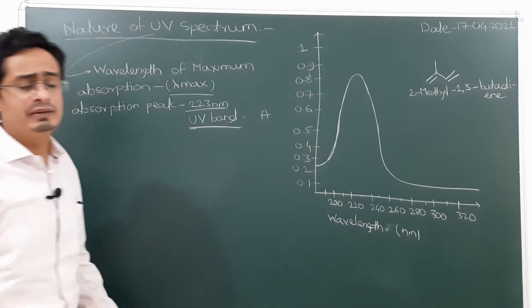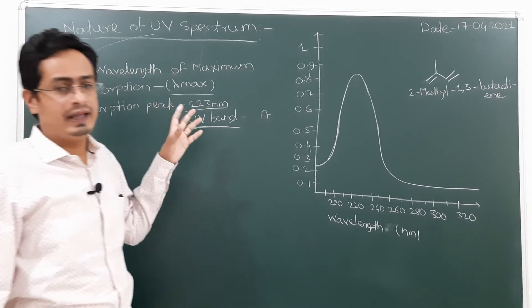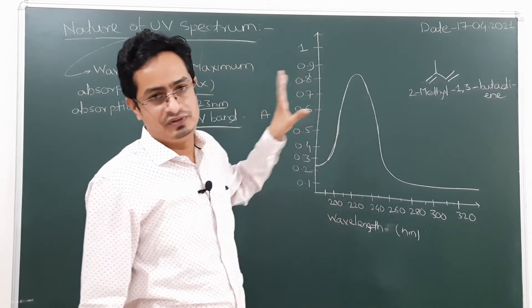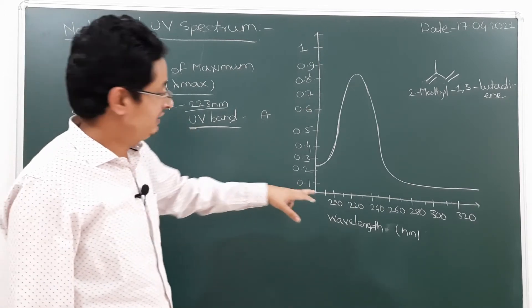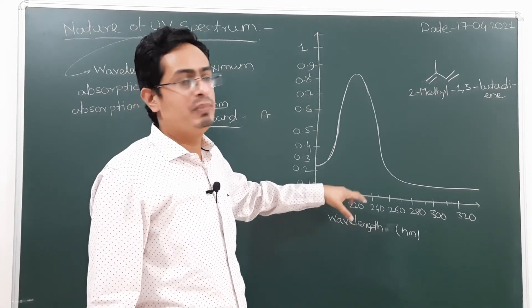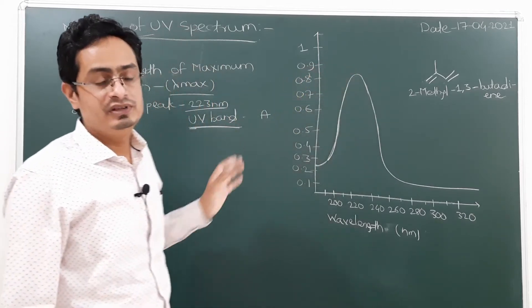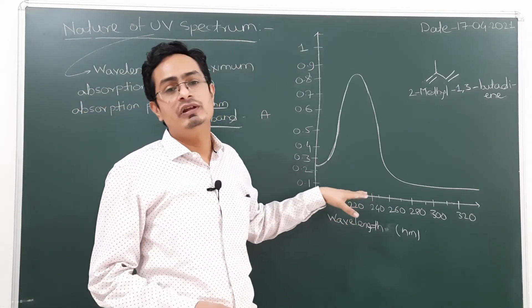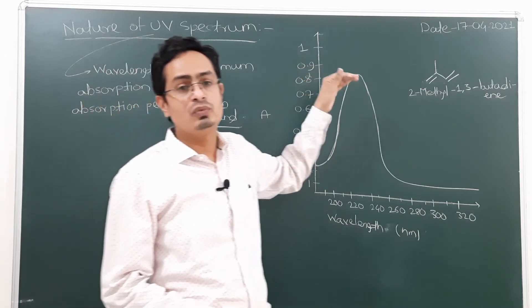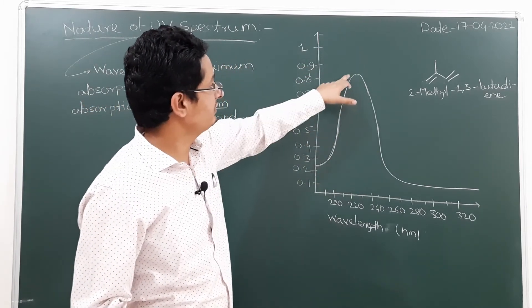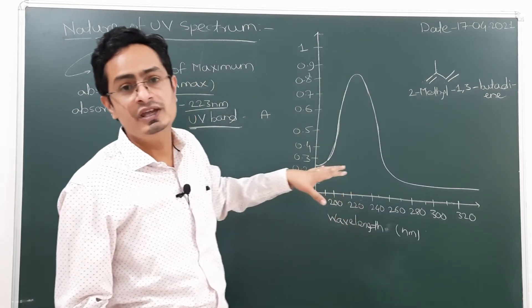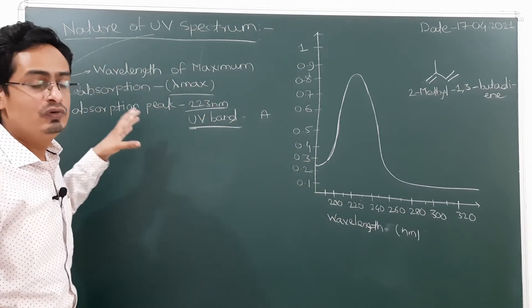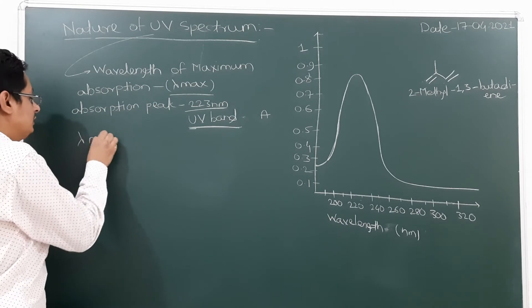This is the wavelength of maximum absorption. The wavelength of maximum absorption is the wavelength at which the sample or compound shows maximum absorbance. The maximum absorbance value here is 0.8 at a wavelength of 223 nanometers, and this is referred to as the wavelength of maximum absorption.